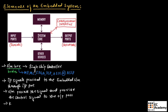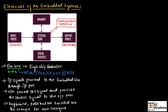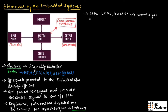The input signals are provided to the embedded system through the input port. At the input port, which is the user interface, keyboards, push-buttons, and switches are examples. At the output port, LEDs, LCDs, and buzzers are examples of common user interface output devices.